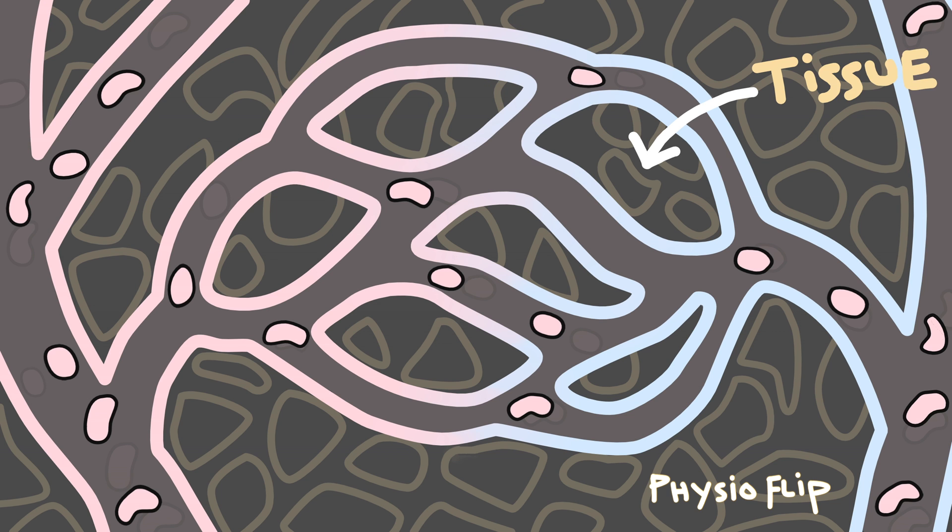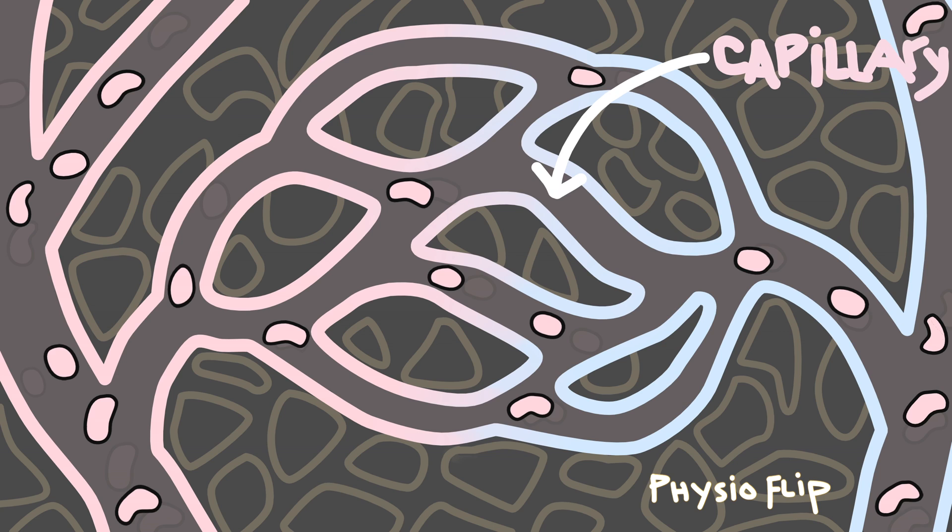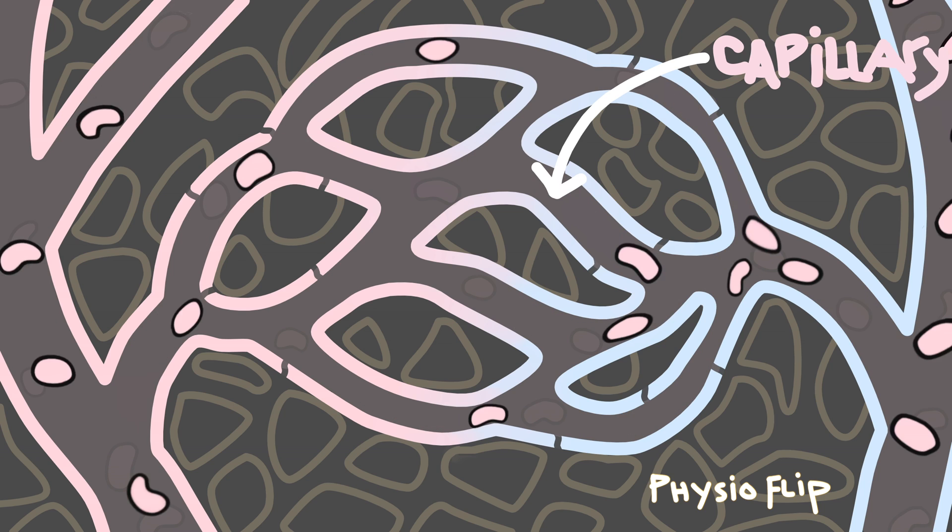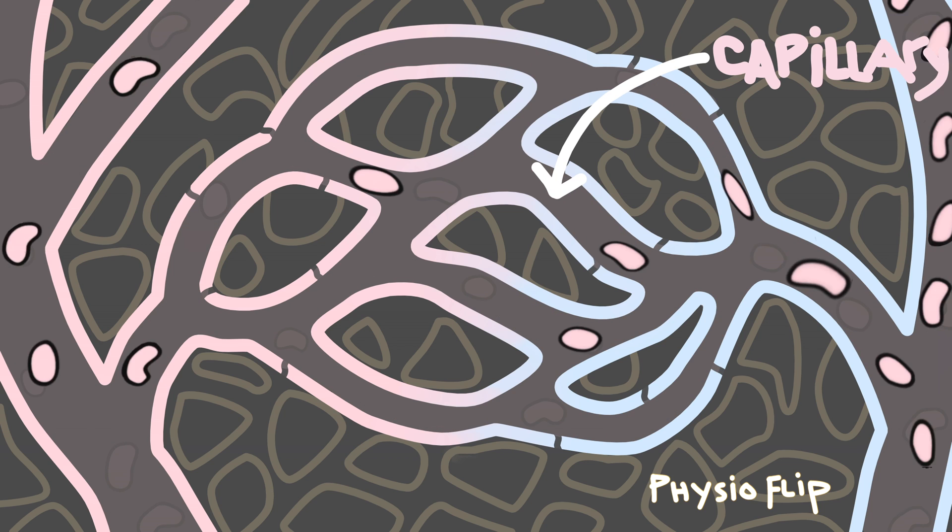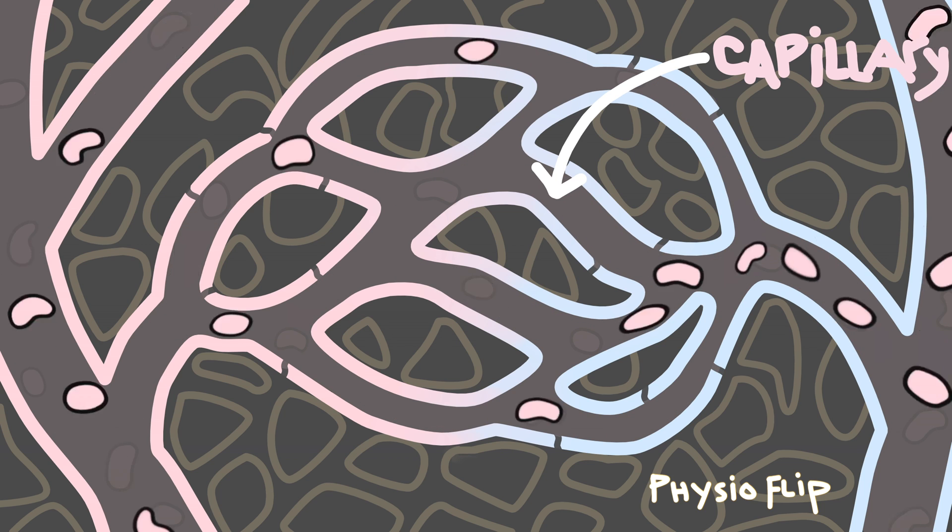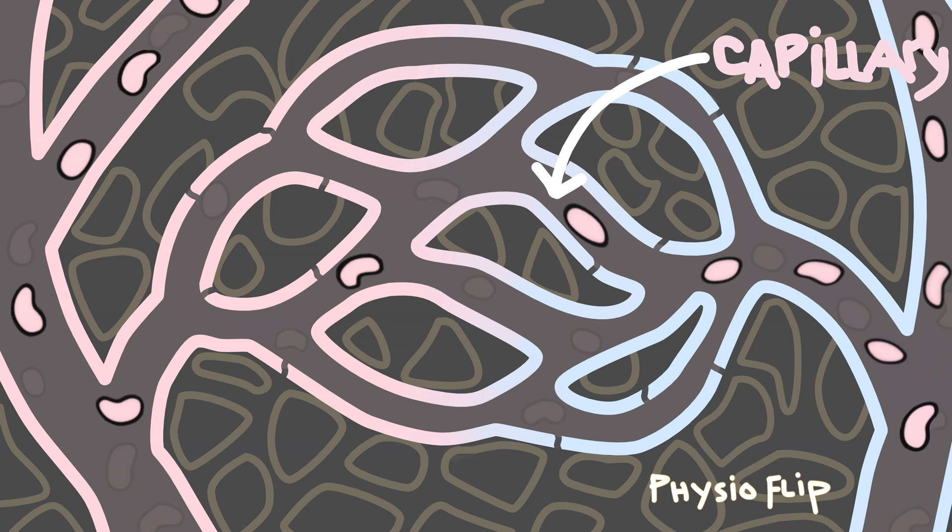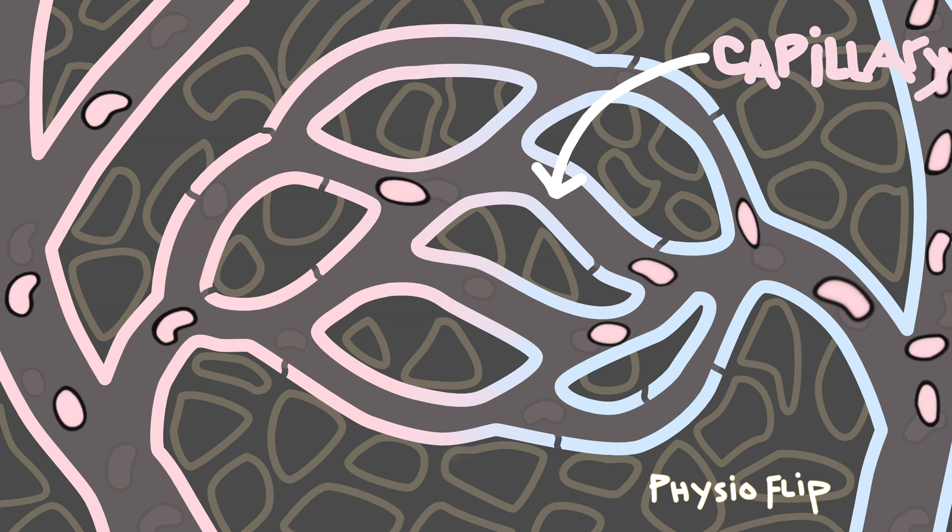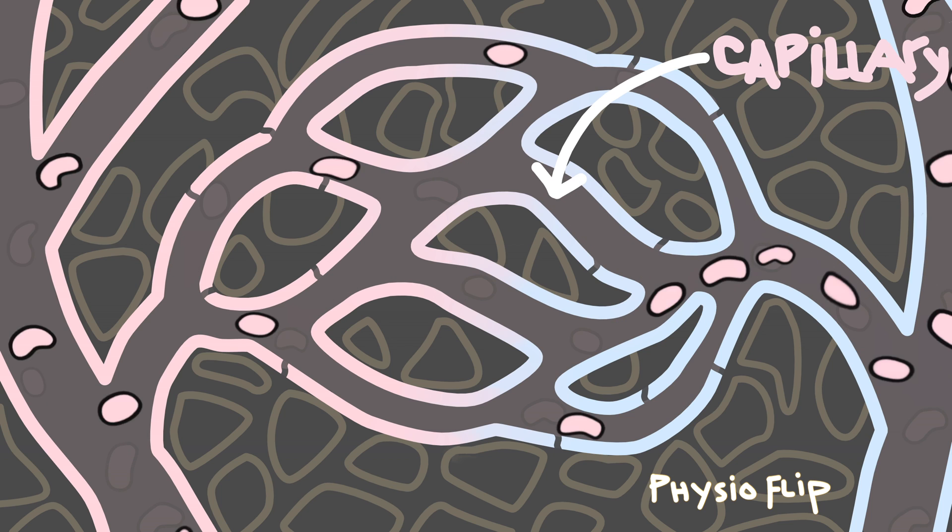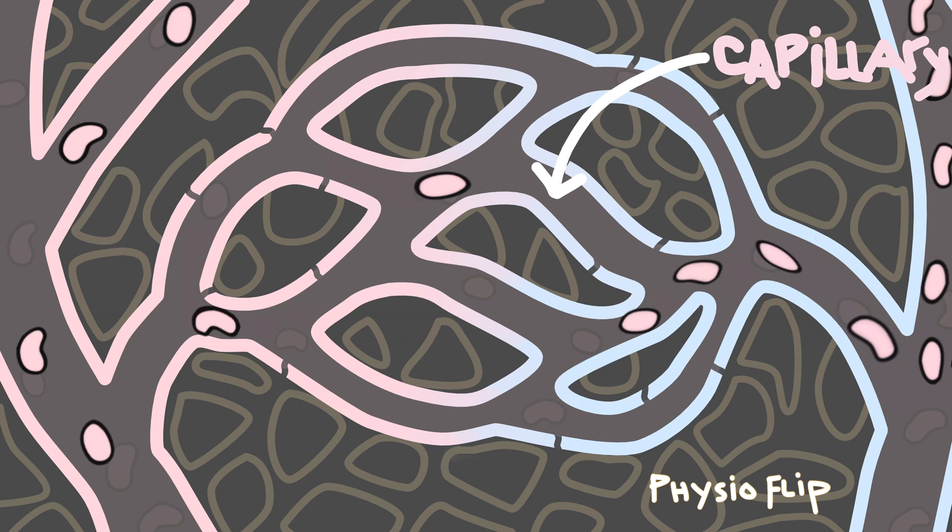Here we have a tissue like muscle or nervous tissue which is being supplied with blood by this network of capillaries. Capillaries with their thin walls, pores and gaps are specially designed to allow for the exchange of nutrients, gases, wastes and fluid between the blood and the tissues. They're the place in the cardiovascular system where we can get stuff into the blood and get stuff out of the blood.